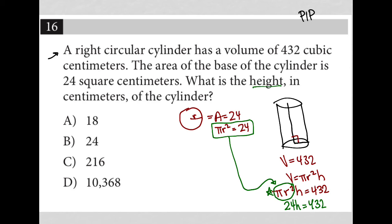Because the question is asking for the height, all I need to do at this stage is solve for h by dividing both sides of the equation by 24. So if I go back to my calculator, I see that 432 divided by 24 is 18. So the height must be 18, and therefore choice A must be the correct answer.